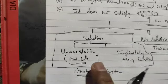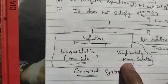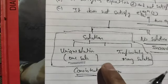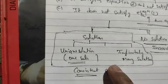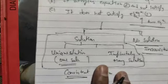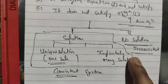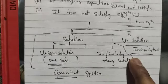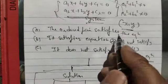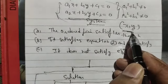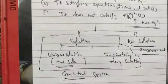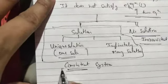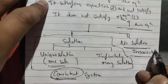Why are we talking about unique solutions versus infinitely many solutions? The answer to this question will be shown when we discuss its geometrical interpretation. The last case is that it has no solution — we cannot solve it; no value of x and y satisfies both equations. So here we have discussed two terms: consistent and inconsistent.